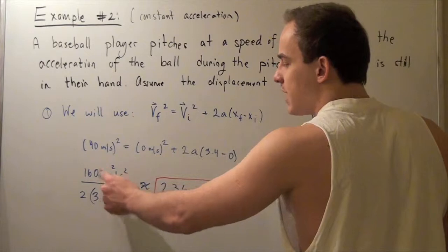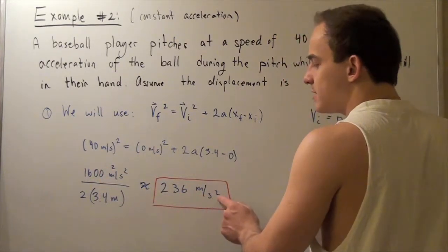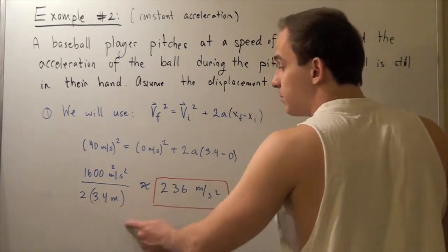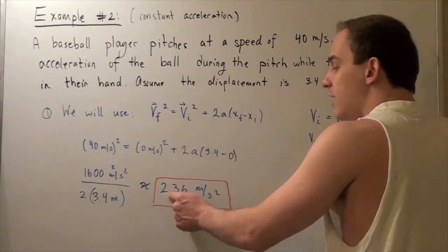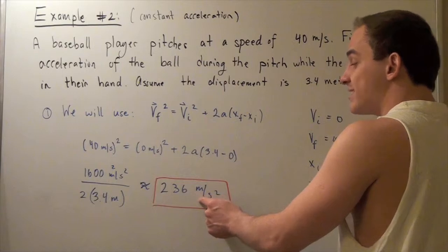One of the meters cancels, we get meters per second squared, which is acceleration. After we divide, we get approximately 236 meters per second squared.